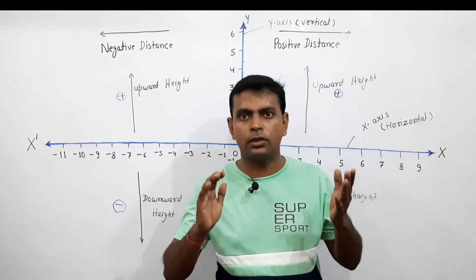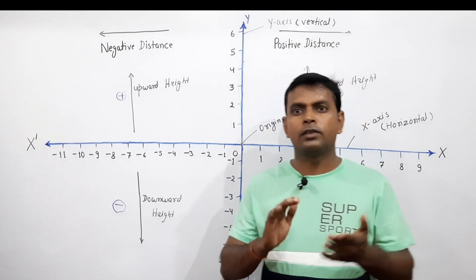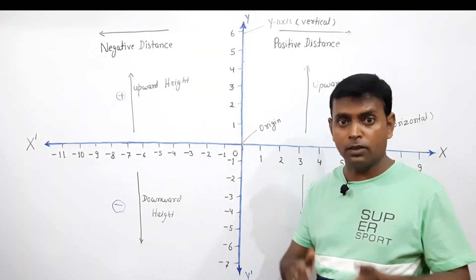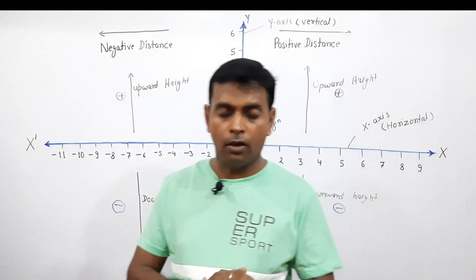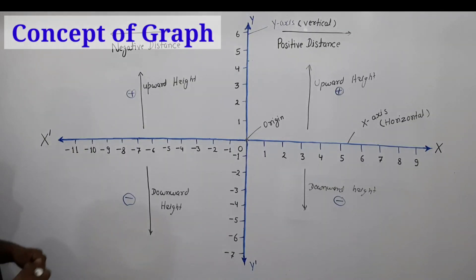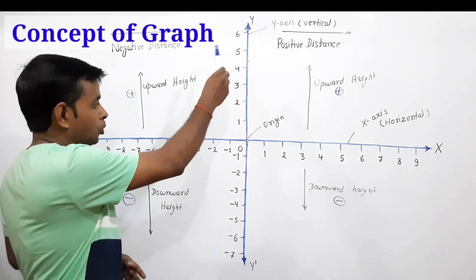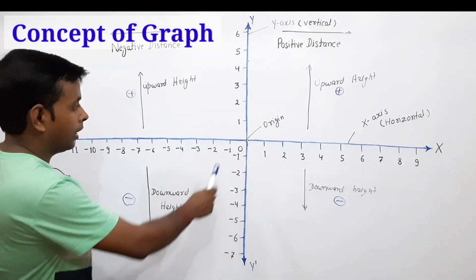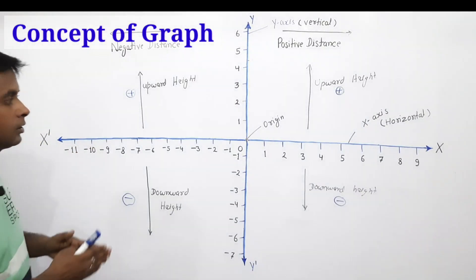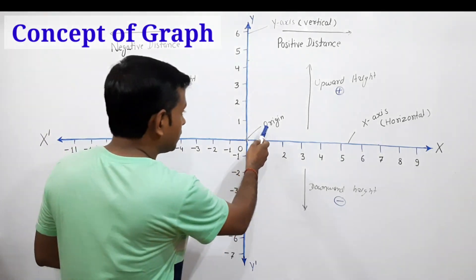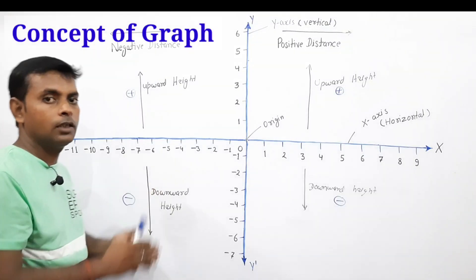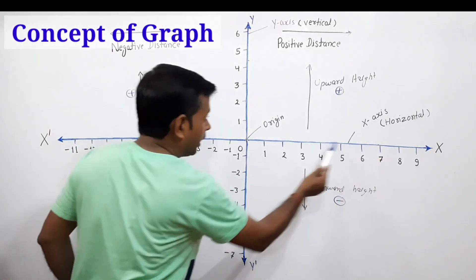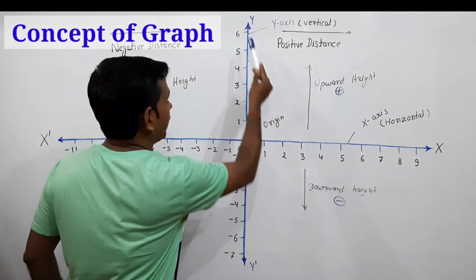It is very necessary to understand the concept of a graph to learn sign convention in a very easy way. A graph consists of two straight lines mutually perpendicular to each other, and the point of intersection of the two lines is known as the origin. Both lines represent individual number lines.